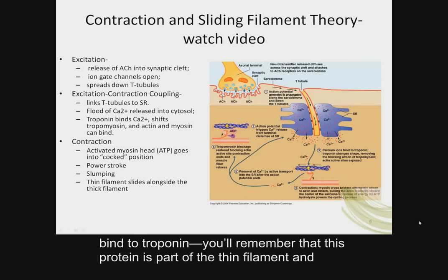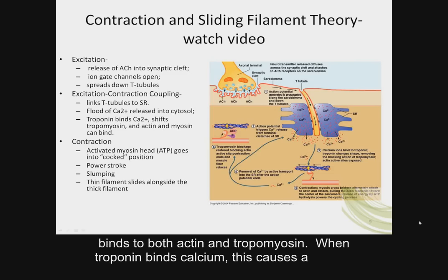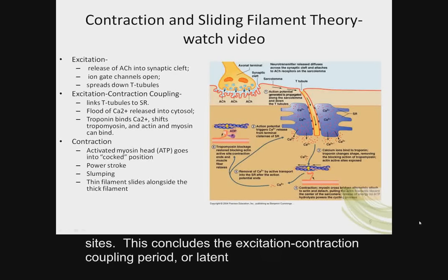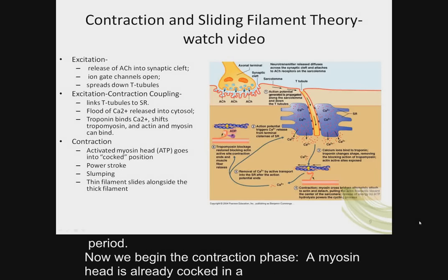The calcium within the cytoplasm can now bind to troponin, a protein that is part of the thin filament and binds to both actin and tropomyosin. When troponin binds calcium, this causes a conformational change in tropomyosin so that it can no longer block actin's binding sites. This concludes the excitation-contraction coupling, or latent period.